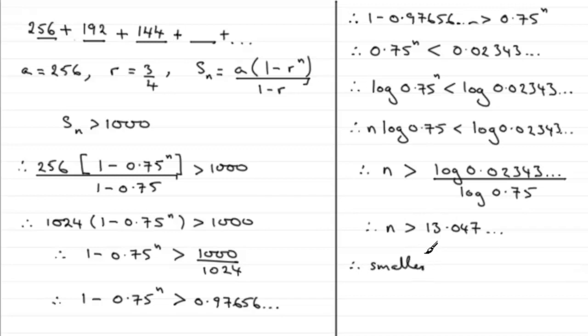So when it comes to the smallest value of n, therefore the smallest value of n must equal 14. Remember, n has got to be an integer, so the smallest value of n is going to be 14.